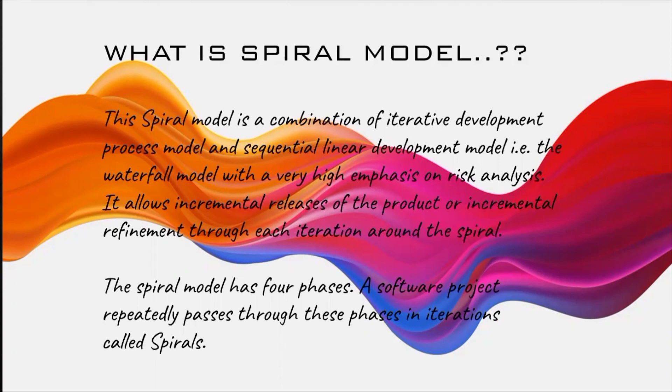If you ask why this model is named 'spiral,' it's because the block diagram of this model is in the form of a spiral. This model is divided into four phases. Each phase of the spiral model is divided into four blocks called spirals.